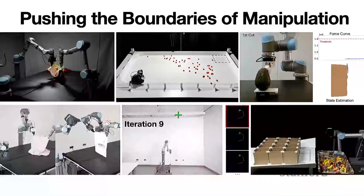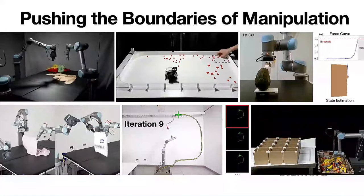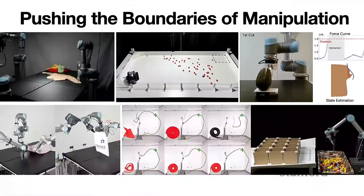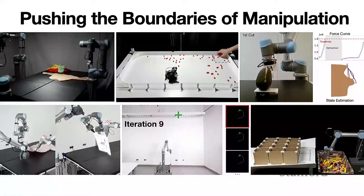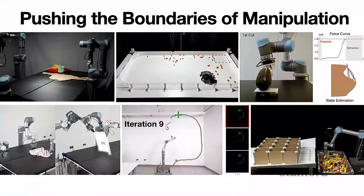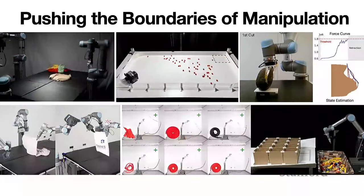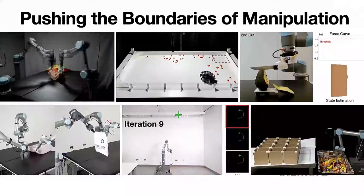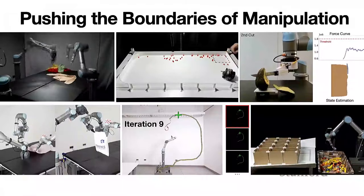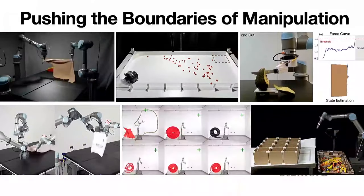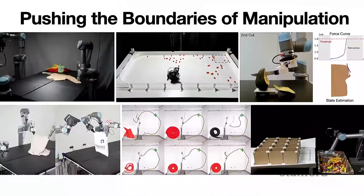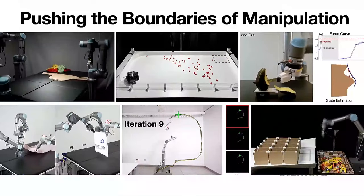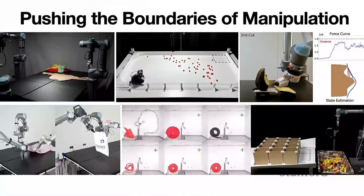Many of you probably know me — I work on robot perception and also manipulation. In our work, what we're really trying to do is push the boundaries for robot capabilities, basically making robots do things that were not possible before. For example, cutting avocados, tossing objects, or blowing leaves.